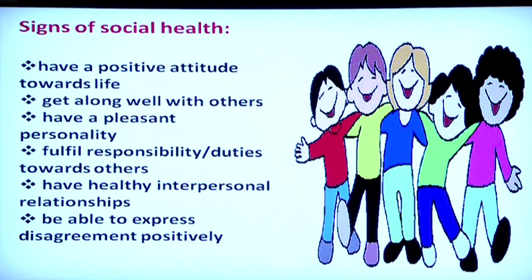A socially healthy person has a positive attitude towards life — they judge their abilities and capacities and accordingly set their desires and dreams. They get along well with others, have a pleasant personality, fulfill their responsibilities and duties towards others, have healthy interpersonal relationships, and are able to express disagreement positively instead of fighting.